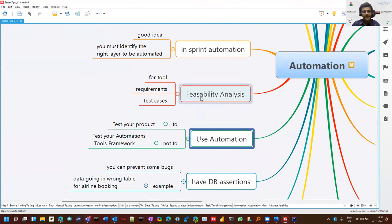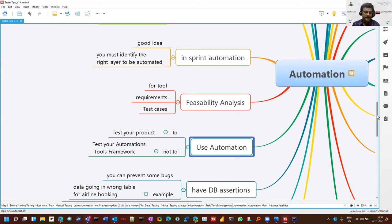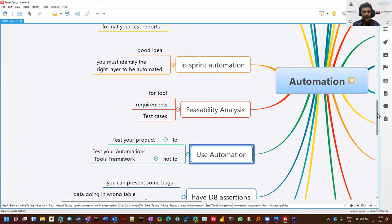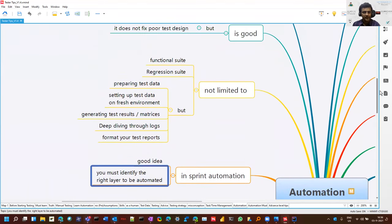You should do the feasibility analysis for the tool, for the requirement, for the test cases. There are new tools coming and we can use various tools for various things. Don't mix and match. If you find API can be done by rest assured, postman, and many tools, so do the analysis which works best for you, what kind of audience who is using it. All those things matter, feasibility is an important thing. In-sprint automation is a good idea. Try to do it here. It's talking about the right layer. APIs or backend is preferred first, then UI which keeps on changing.